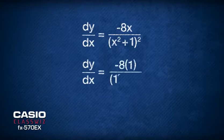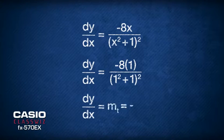Then all we have to do is substitute the x coordinate of the point of tangent, which is x equals 1, and we get the gradient of tangent to be negative 2.